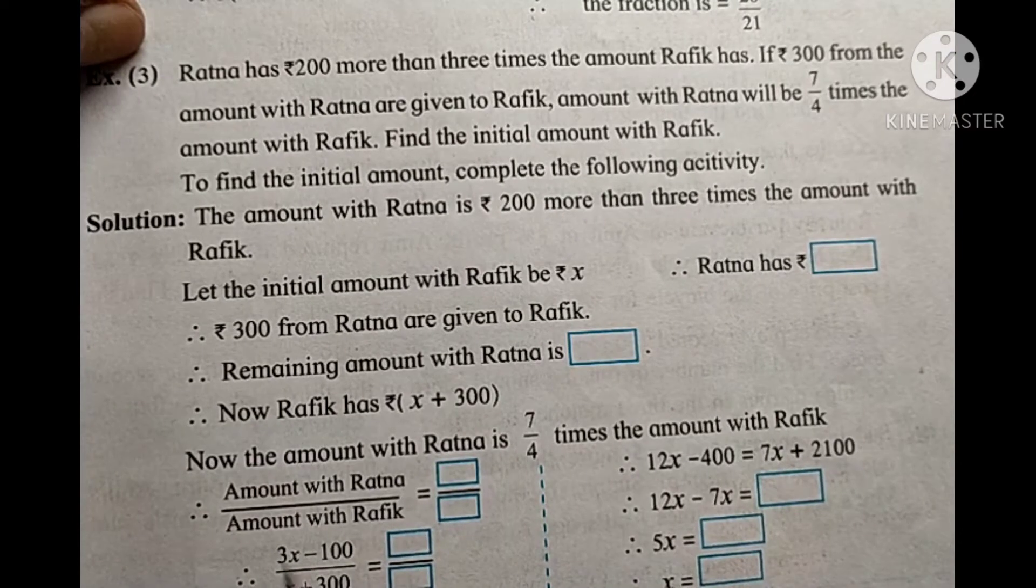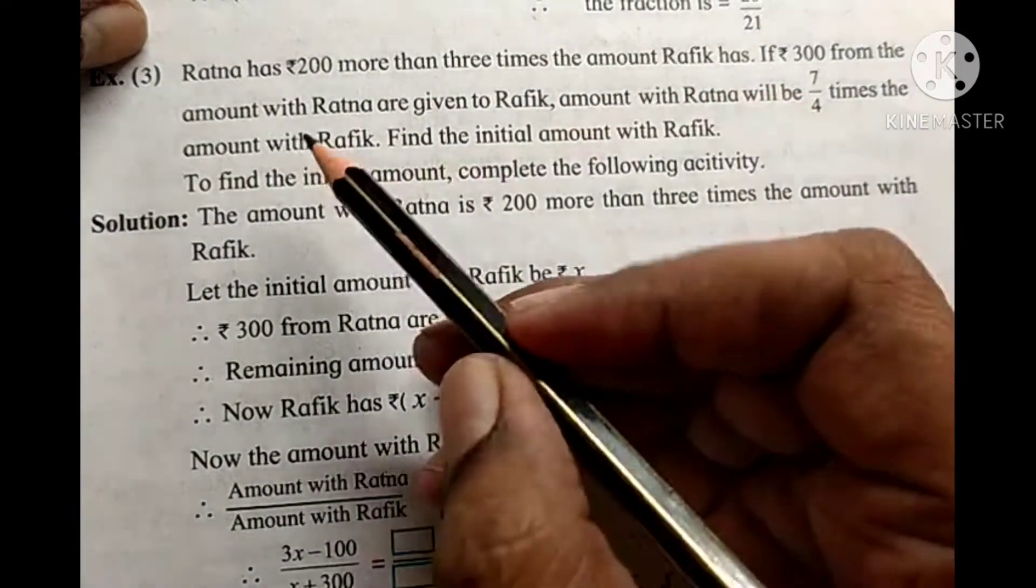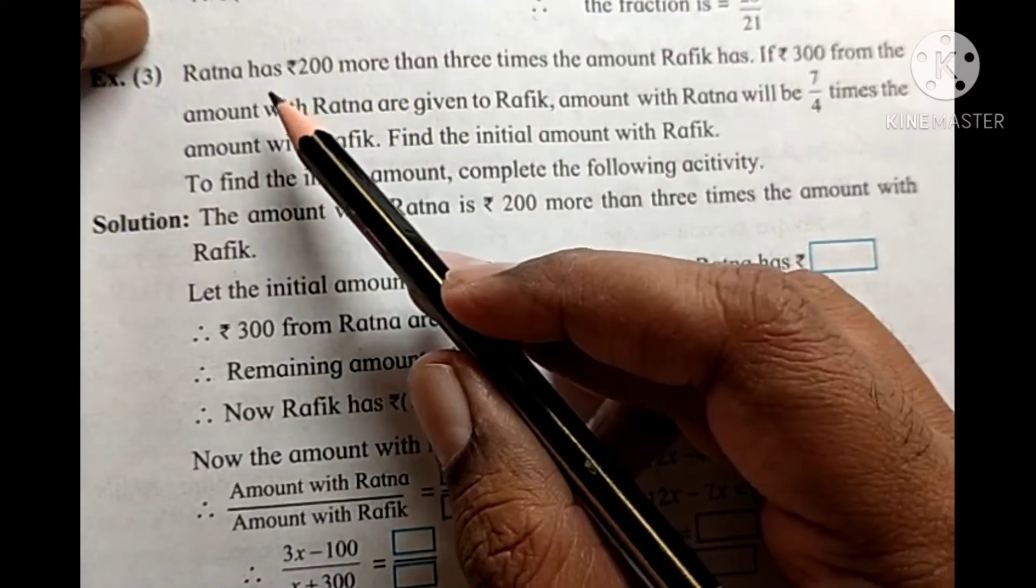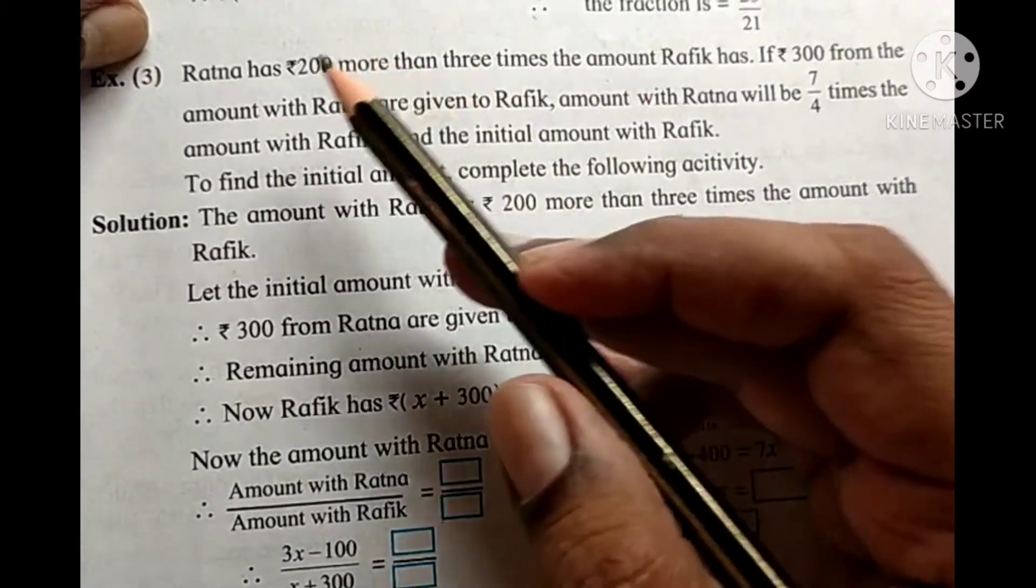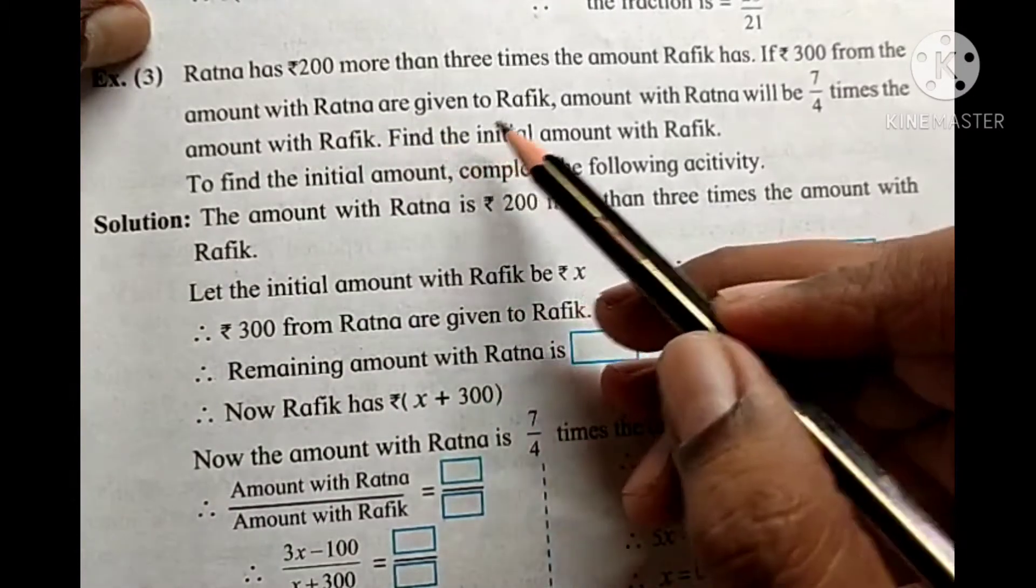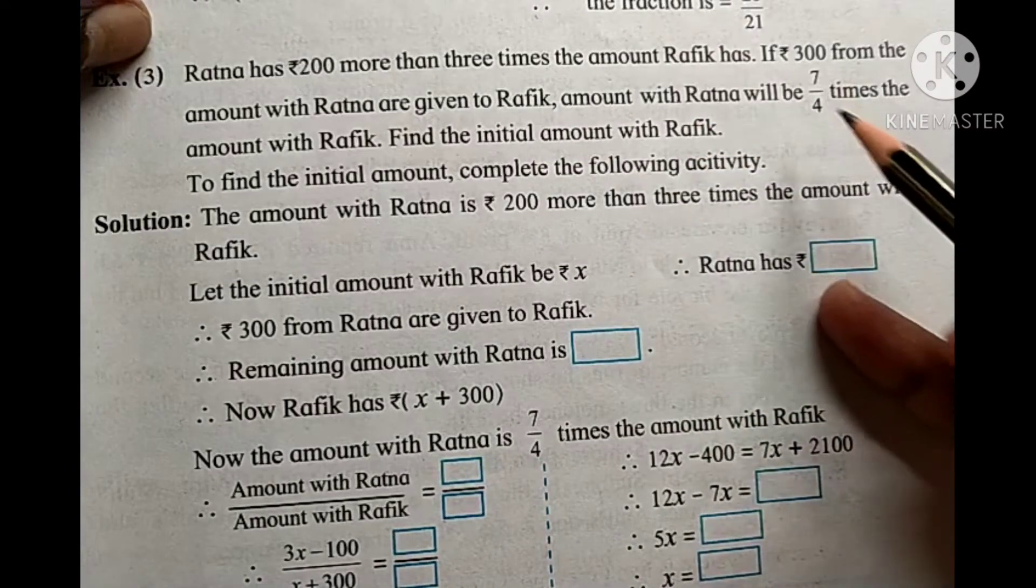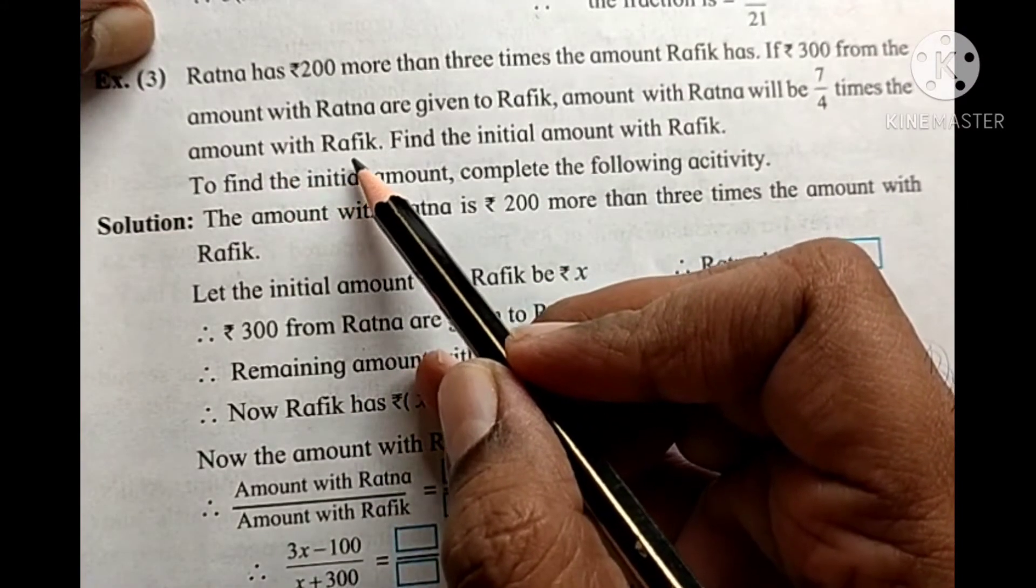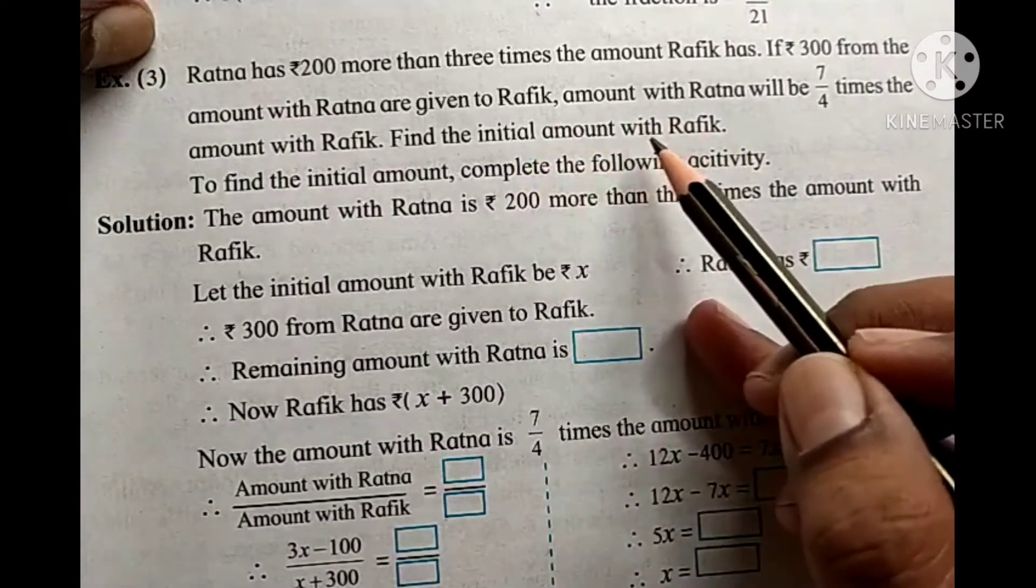Ratna has ₹200 more than three times the amount Rafiq has. If ₹300 from Ratna are given to Rafiq, Ratna will have 7 upon 4 times the amount Rafiq has. Find the initial amount with Rafiq.